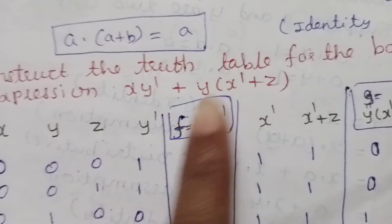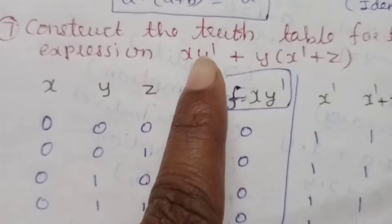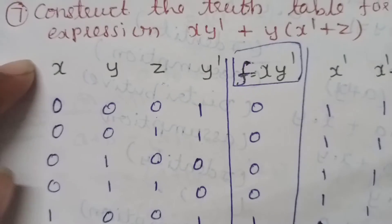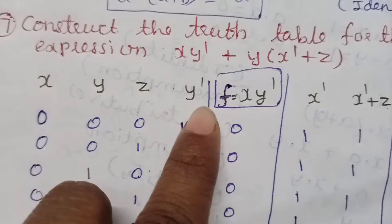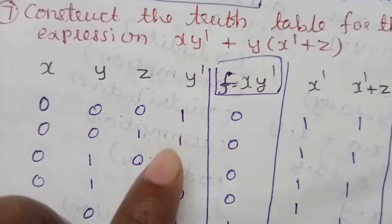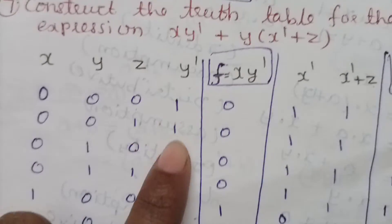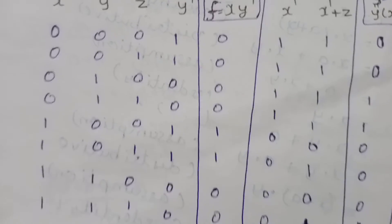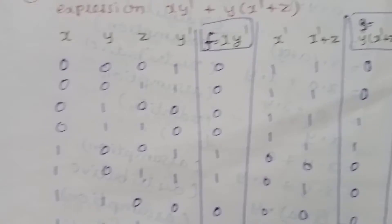Y dash is equal to y complement. So complement of 0 is 1, complement of 1 is 0. y dash is equal to y complement.